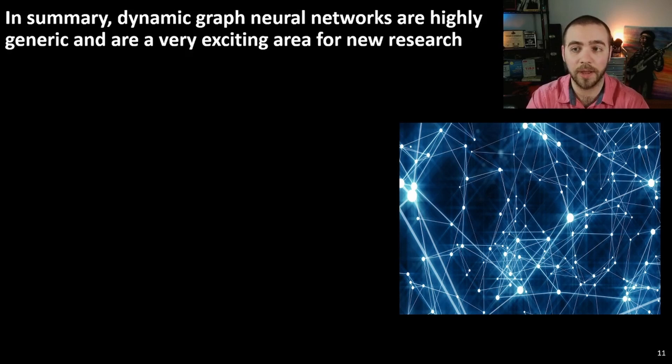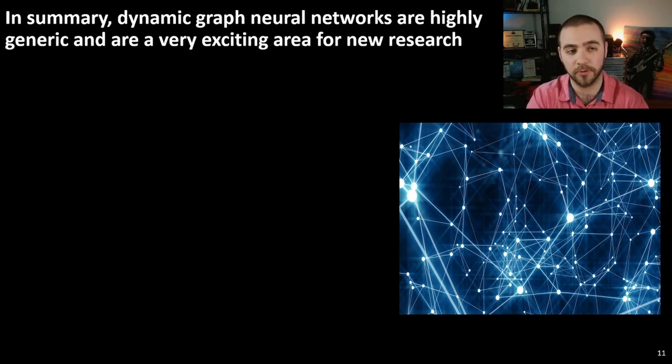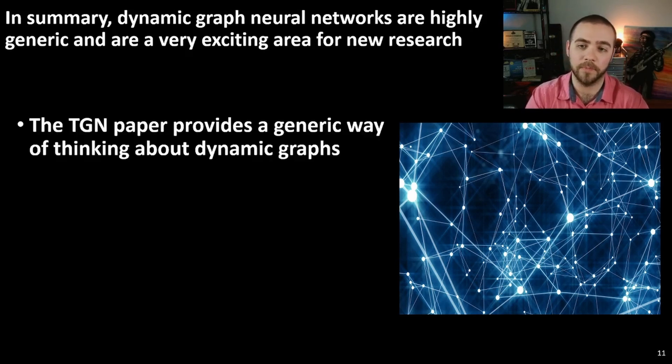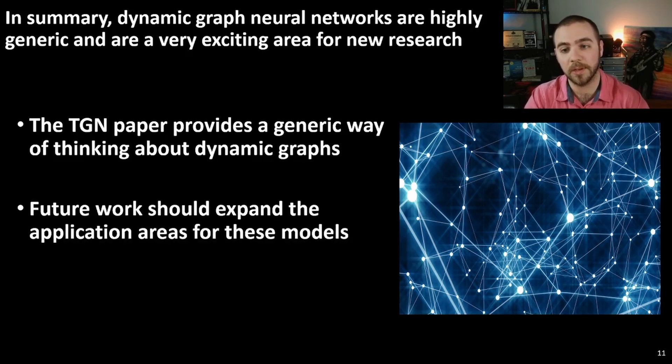In summary, dynamic graph neural networks are a highly generic approach to modeling graph data, and they are a very exciting area for new research. The TGN paper is important because it provides a very generic way of thinking about dynamic graphs, and future work should definitely be done to expand the application areas for these models. If you enjoyed this video, please hit the like button and subscribe to the channel. Feel free to leave a comment — especially if you're a professional researcher or machine learning practitioner who has thought about using these models in your work. Thank you so much for watching, and we'll see you in the next video.